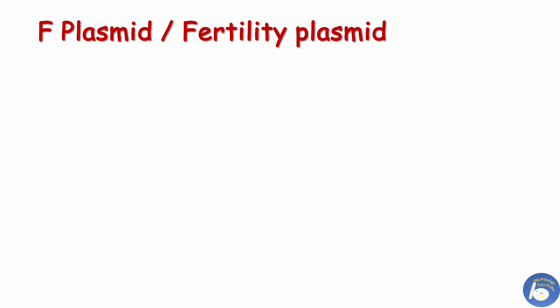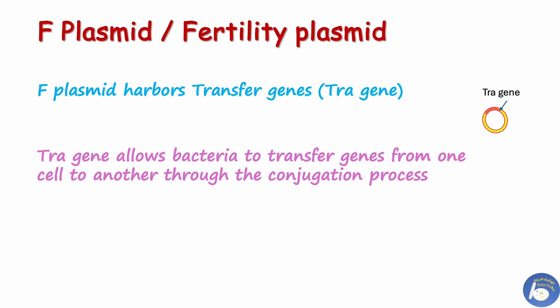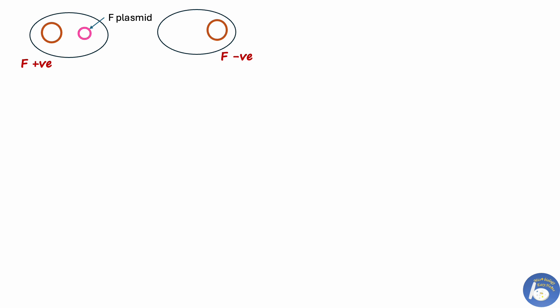F plasmid, or fertility plasmid: this plasmid harbors transfer genes — the tra gene — that allows bacteria to transfer genes from one cell to another through the conjugation process. Bacteria that contain F plasmid are known as F-positive bacteria, whereas bacteria lacking F plasmid are known as F-negative bacteria.